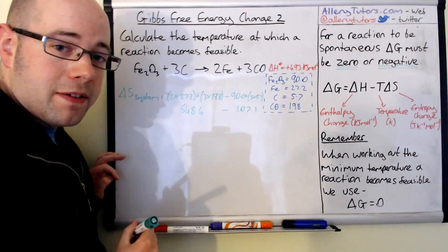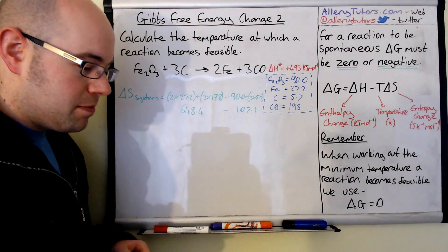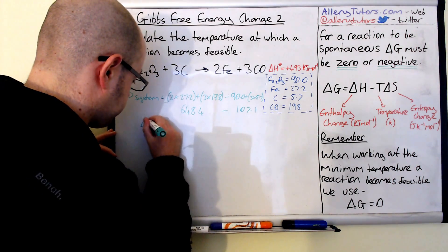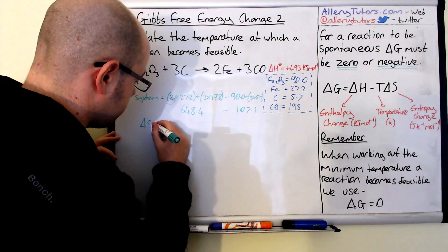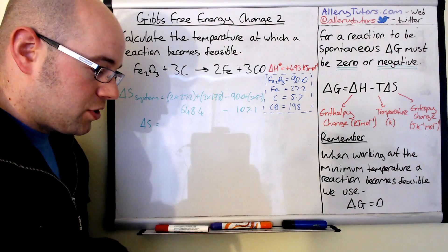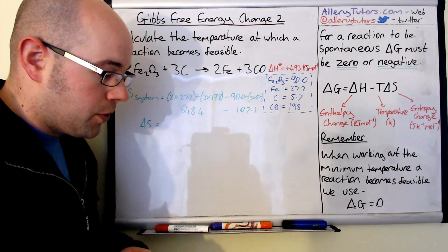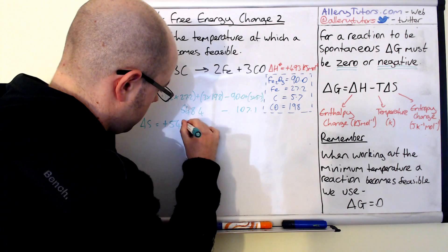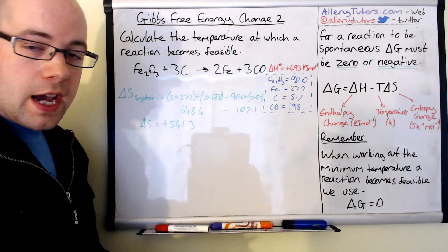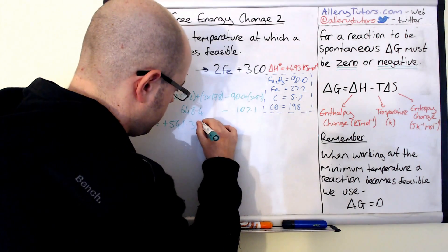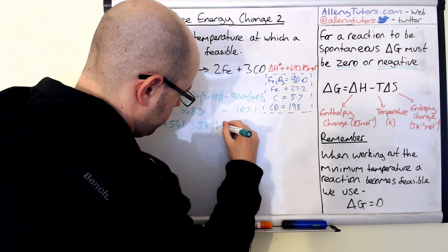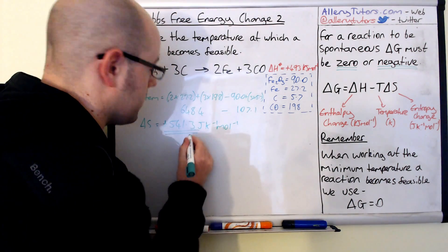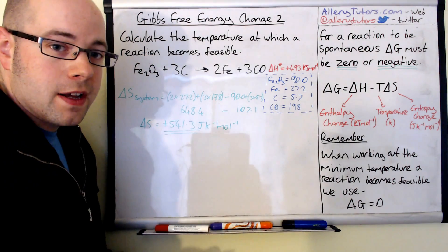If you put that into your calculator, you should get a number for delta S of the system. That should equal plus 541.3, and this is joules per Kelvin per mole. This is the value of the entropy, which is the delta S.